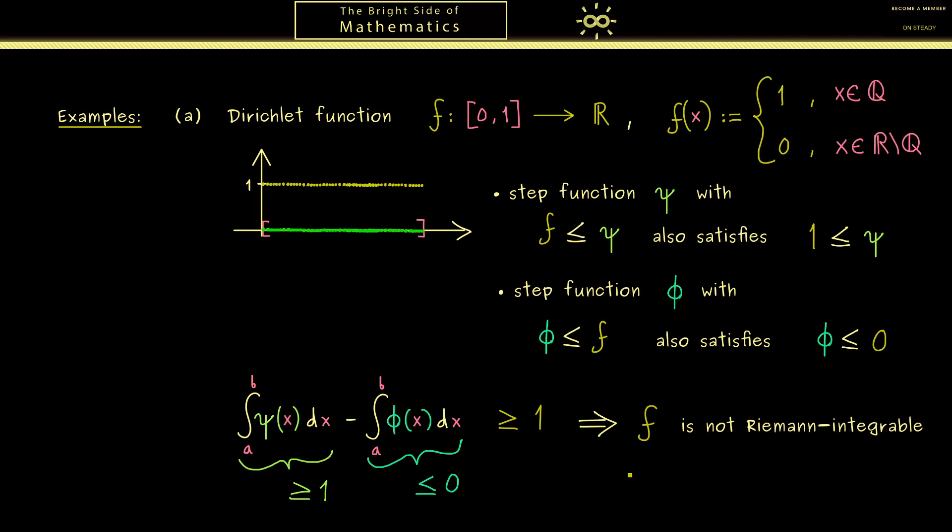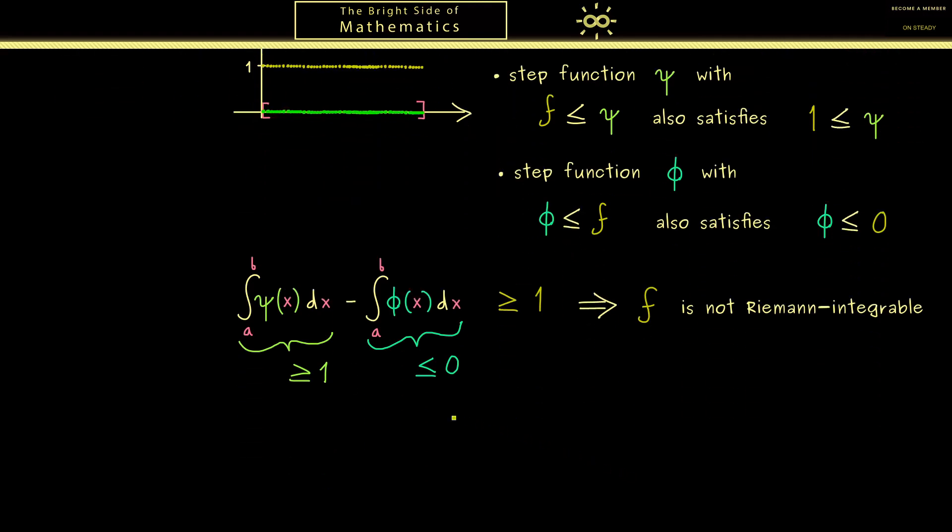Then next I would say we look at a function that is actually Riemann integrable. Of course for the start let's look at a very simple example. And I guess the identity f is equal to x is a very suitable example. This is simply because when we draw the graph we immediately see what the integral should be. You see the area is given by this triangle which means the area should be 1/2.